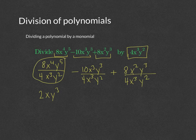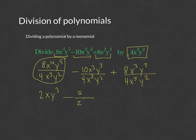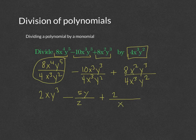Then let's try the next one. 10 over 4 reduces to 5 halves. x cubed over x cubed is 1. And y cubed over y squared is just y. Then the last term: 8 over 4 is 2. x squared over x cubed gives us an x in the denominator. And y cubed over y squared is y.